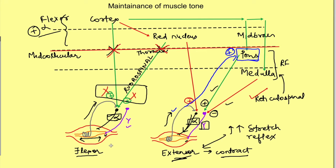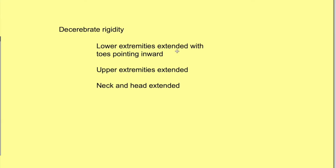So in decerebrate rigidity, we see that both lower extremities and upper extremities are extended. The lower extremities are extended with toes pointed inward, the upper extremities are also extended, and the neck and head are also extended.